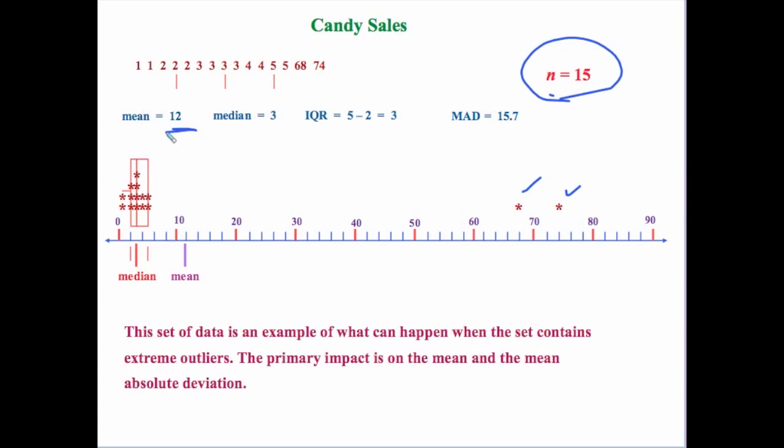But look at your mean absolute deviation — it comes out to 15.7. So what that's saying is that all of my data points are an average of 15.7 away from the mean. Mathematically that's true, but when you look at your data you can see that most of the data points are not that far from the mean.